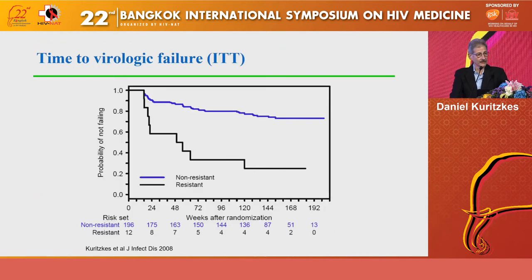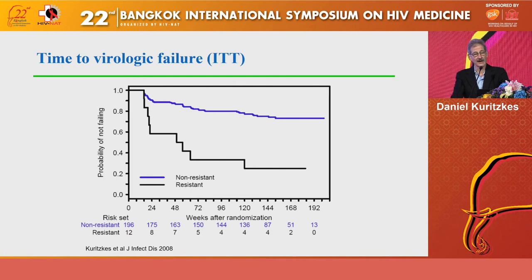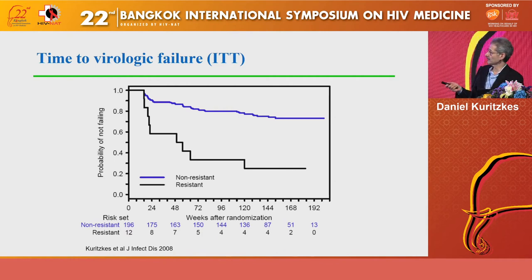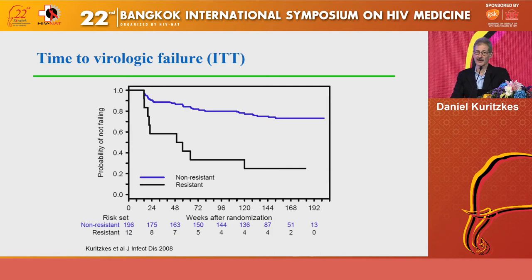We know from work done through the AIDS Clinical Trials Group more than a decade ago that pre-existing drug resistance — in this situation most likely transmitted drug resistance — has a significant negative impact on regimen success if the transmitted resistance is to the non-nucleoside RT inhibitors and an efavirenz- or nevirapine-based regimen is used. In a retrospective analysis using baseline samples from ACTG-5095, which studied efavirenz in combination with various nucleoside RT inhibitors, patients were not pre-screened for resistance as this predated standard pre-treatment testing.